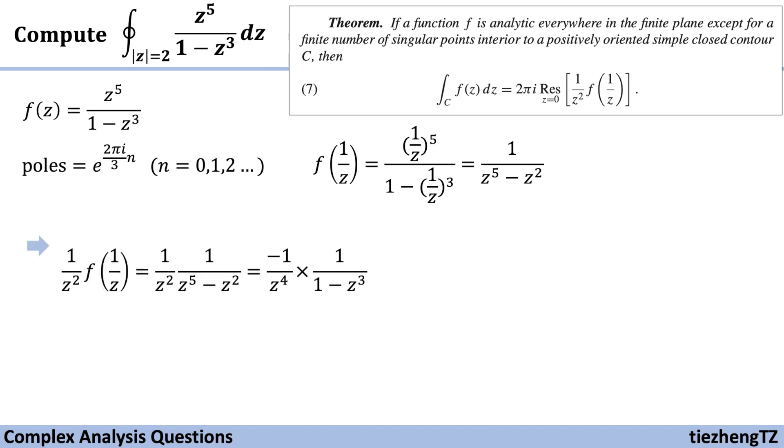So we just substitute and do some optimization. We have -1/z^4 times 1/(1-z^3). And when we see this, we know we are going to use this expansion form to expand.